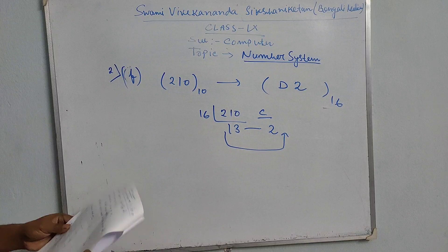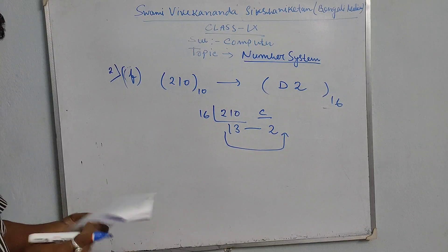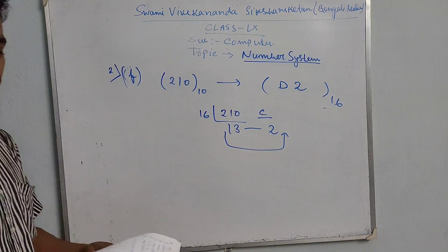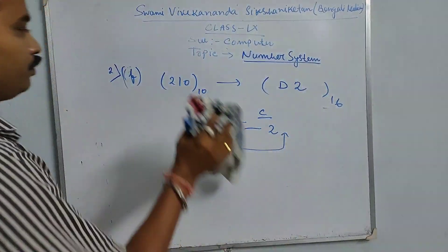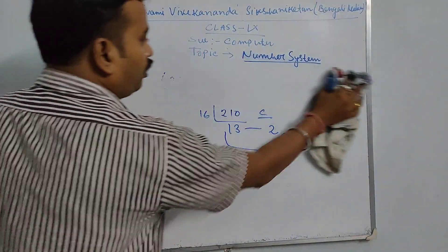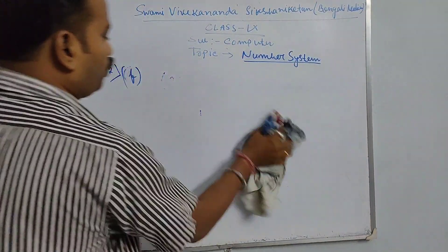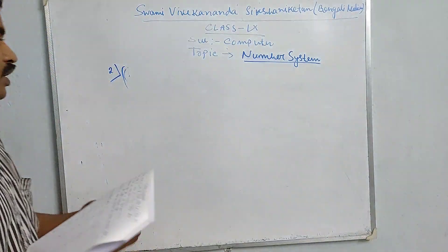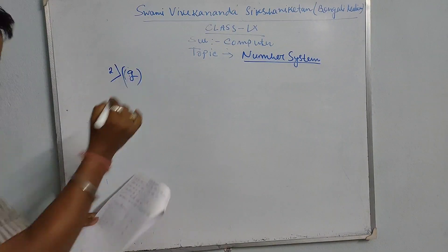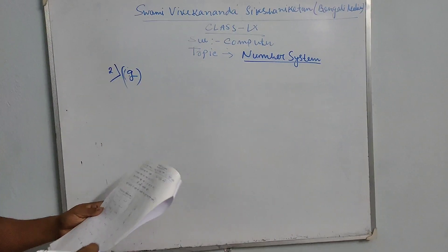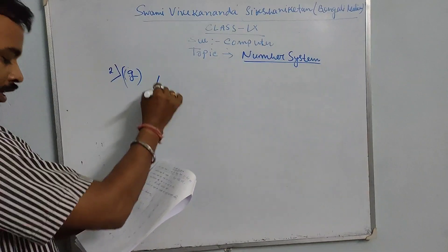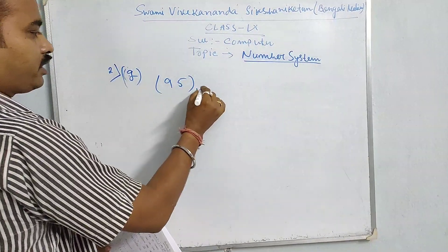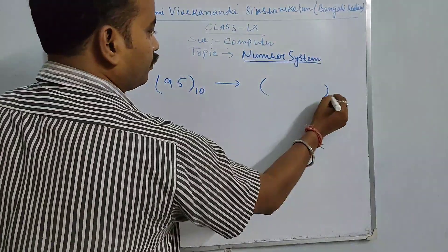Now we solve question number G. The next problem: how is a decimal number converted to binary? In question number G, a decimal number — that is 95 — is converted to binary.